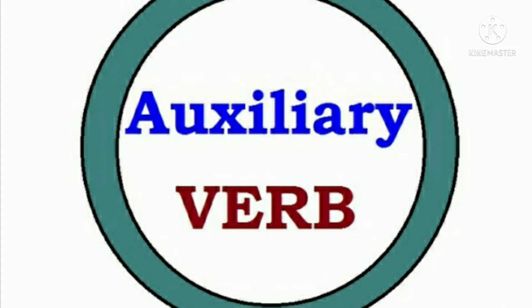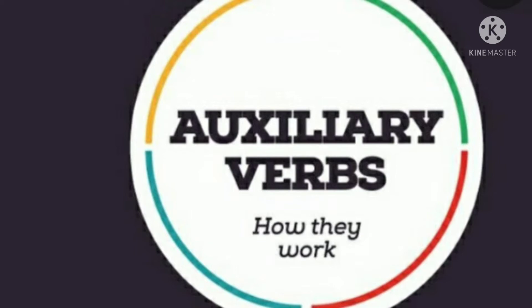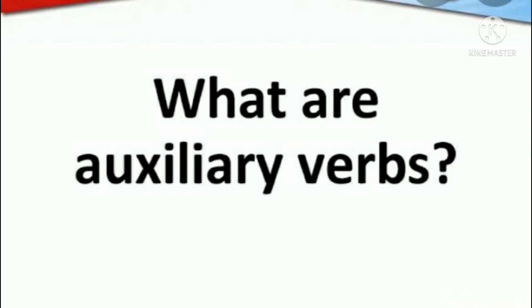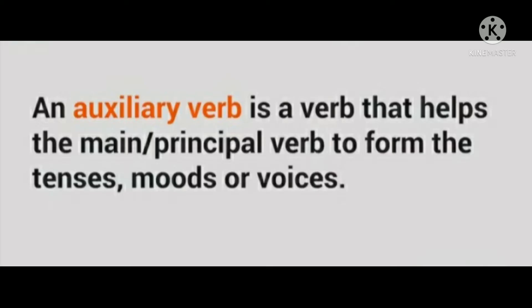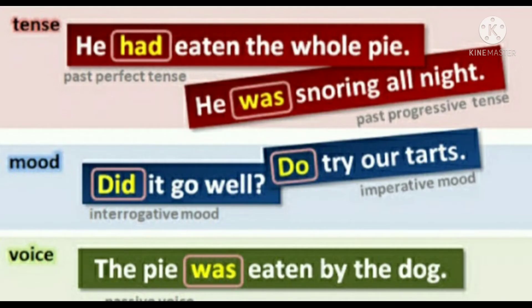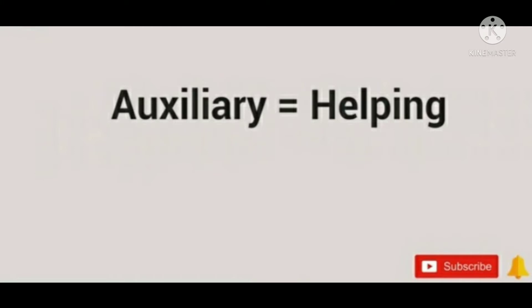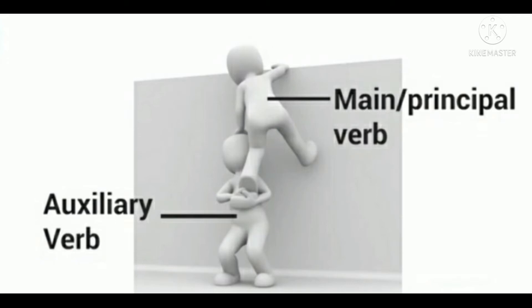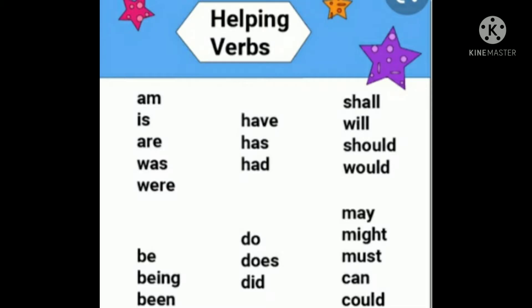Hi guys, you're watching my channel Online Teaching and Guidelines with Engineer KM. Today I will tell you about auxiliary verbs and their types. An auxiliary verb is a verb that helps the main verb to form tenses, moods, and voices. Tenses mean present, past, or future tense. Moods mean imperative or interrogative mood. Voices mean passive voice. Auxiliary verb is basically a helping verb. Examples are: am, is, was, were.